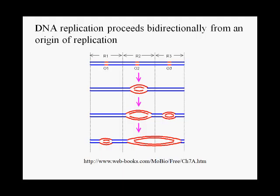DNA replication proceeds bidirectionally. Even though DNA polymerase can only make DNA in one direction, replication factories — the replication complexes — move along the DNA in both directions. What we're showing here is a double-stranded parental DNA molecule. The first thing that has to happen is that at specific points in the DNA called origins — the origin of DNA replication — the DNA duplex base pairing is undone, and the strands are able to separate.